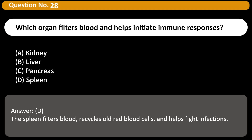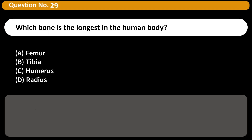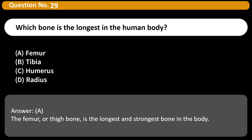Which bone is the longest in the human body? A) Femur, B) Tibia, C) Humerus, D) Radius. Answer: A. The femur, or thigh bone, is the longest and strongest bone in the body.